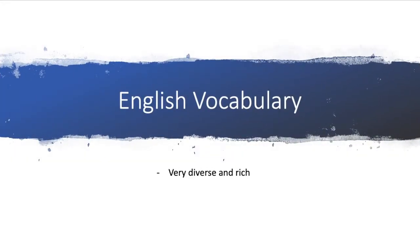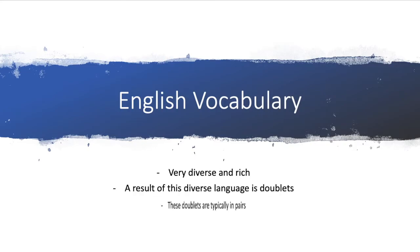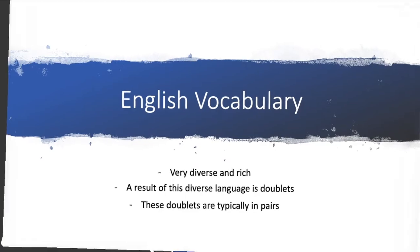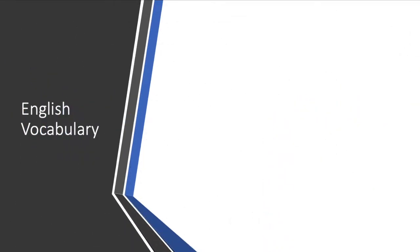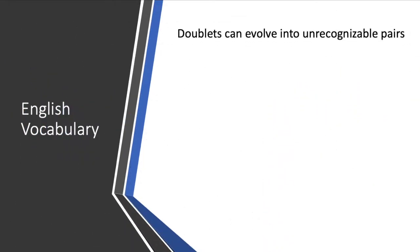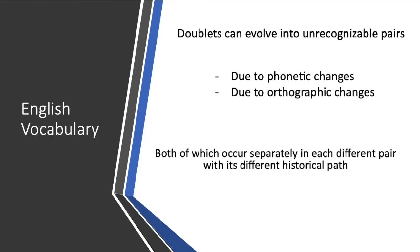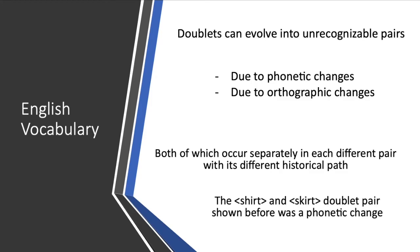English vocabulary is very rich and diverse, and a result of that are doublets. These doublets are typically in pairs. Doublets can evolve into unrecognizable pairs due to phonetic and orthographic changes, both of which occur separately in each different pair with its different historical path — just as shirt and skirt are a doublet pair formed by a phonetic change.